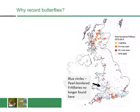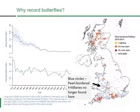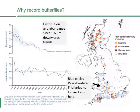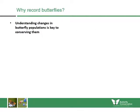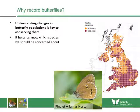If you look at the maps of pearl-bordered fritillaries, we can see what's happened to them. The blue circles show records going back to the early 1970s, and those blue circles show sites where pearl-bordered fritillaries are no longer found. The graphs also show that their distribution and abundance trends since the 1970s are generally going downwards, showing they are in dire need of conservation work. This helps us know which species we should be concerned about.